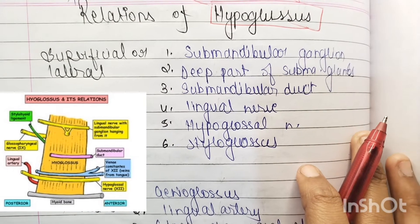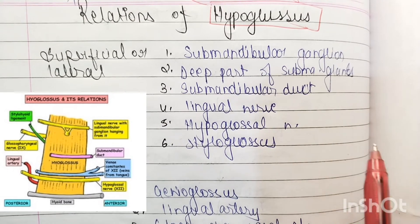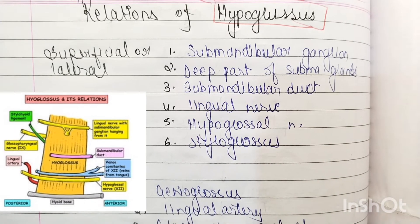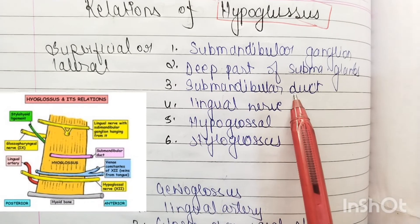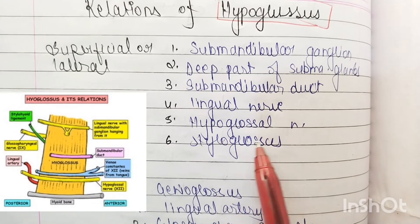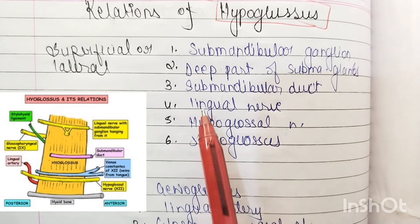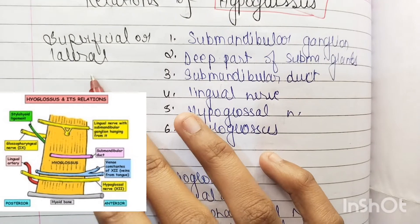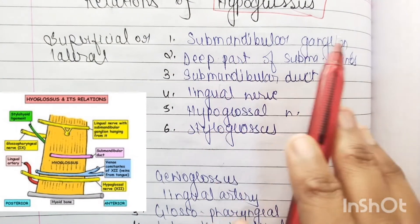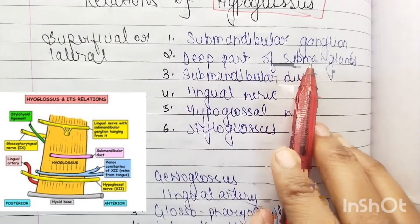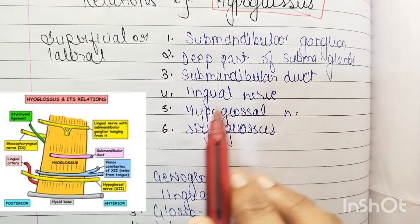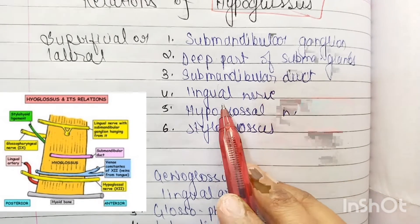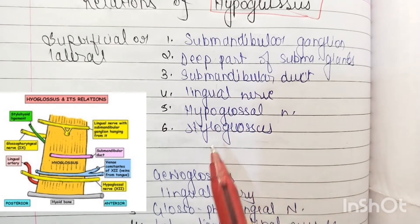The six lateral or superficial relations of the hyoglossus are: first, the submandibular ganglion; second, the deep part of the submandibular gland; third, the submandibular duct; fourth, the lingual nerve; fifth, the hypoglossal nerve; and sixth, the styloglossus.